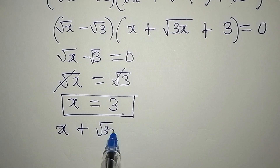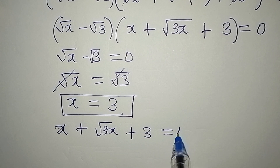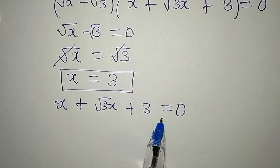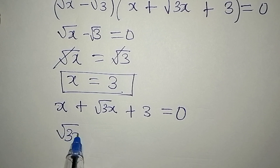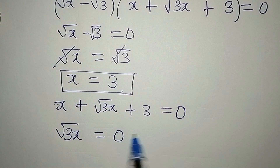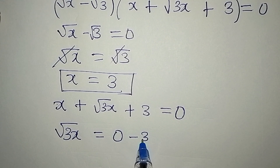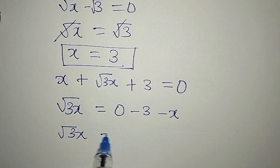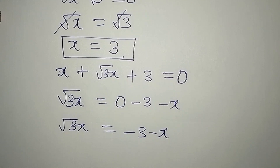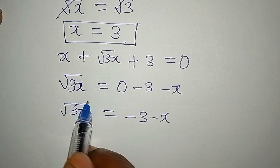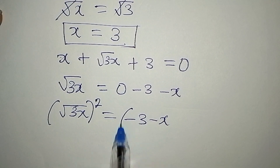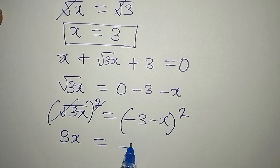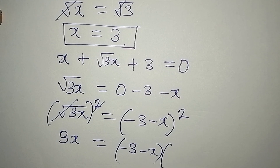Then we need more solutions, which we get from the second equation: x plus square root of 3x plus 3 equals zero. Let's make square root of 3x the subject — taking everything else to the other side, so square root of 3x equals negative 3 minus x. Now we square both sides to eliminate the square root: 3x equals negative 3 minus x, times negative 3 minus x.